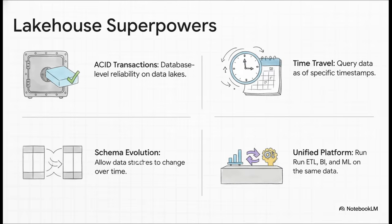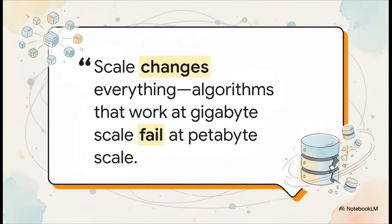We're talking about things that used to be basically impossible on this scale. Things like ACID transactions—bringing the rock-solid reliability of a traditional database to these enormous files. We're talking about the ability to literally time travel and ask, hey, what did our data look like last Tuesday at 3 PM? It's all about having one unified place for everything: business intelligence, data processing, and machine learning, all on the same data.